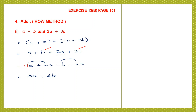Let me explain the row method once again. We have two expressions — put both in a single row with brackets and a plus sign between them. In the next step, remove the brackets; don't change the sign of any term inside. Then arrange the like terms together: we took the a's together, then the b's together, and worked them out because we can only add like terms. So the answer is 3a plus 4b.